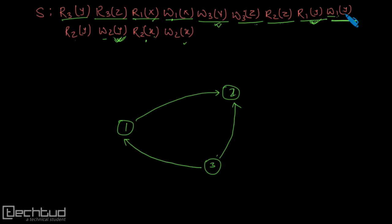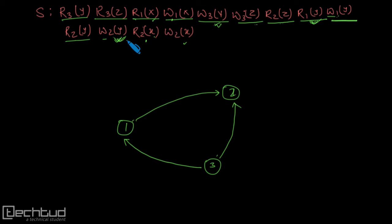Now w1y. On y I need to find a read or write operation done by a transaction other than 1. I have this operation on y — these two are conflicting. So I need to draw an edge from 1 to 2, which I already have. Now r2y — I need to find a conflicting operation with this in the rest of the operations. For y, this one is the same transaction. No other operations on y, so this is also done — as this is the last operation on y, no further conflicting operation.